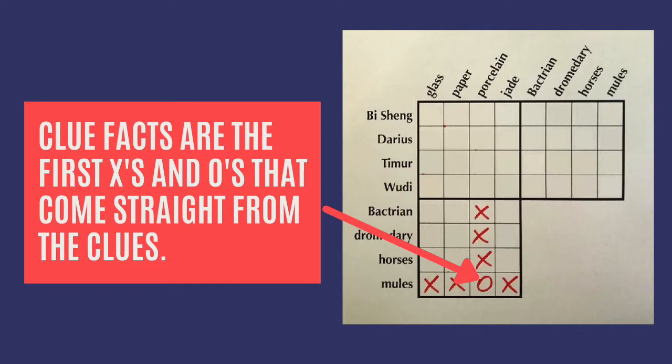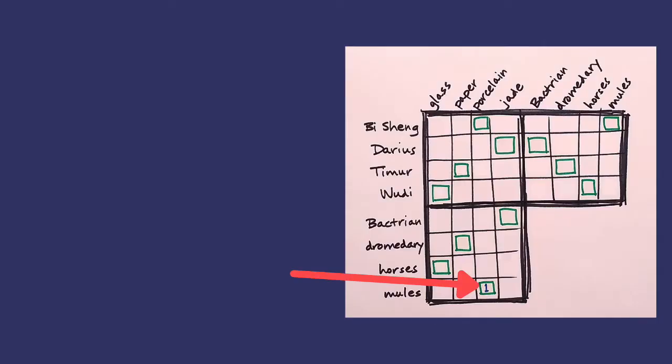When you're making a puzzle, if you pick the clue facts first, it makes writing the clues much easier. To get started, pick one clue fact randomly. Let's choose: porcelain and mules go together.